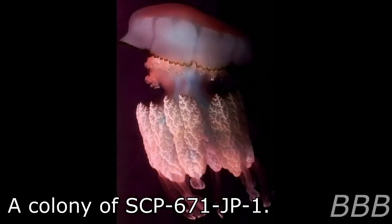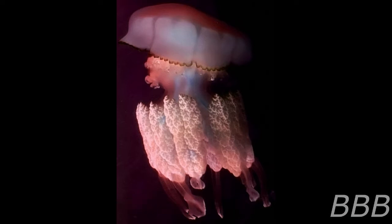Item number SCP-671-JP. Object class Euclid. Special Containment Procedures.